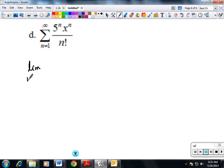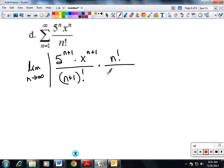Then let's just do the ratio test again. The limit as n goes to infinity of 5^(n+1) times x^(n+1) over (n+1) factorial. And I'm dividing by this, I'm actually multiplying by the reciprocal, n factorial over 5^n times x^n.